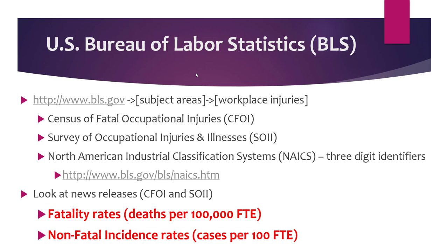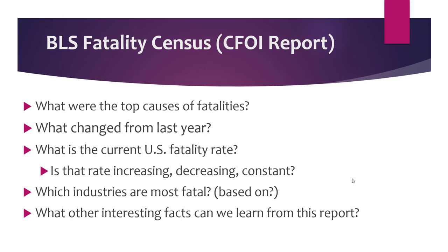This was covered on Tuesday. I talked about the fatality report, the non-fatal injury and illness report, the industrial classification system, and the units expressed when talking about fatality rates versus non-fatal incidence rates. These are the slides from Tuesday's lecture — I indicated we'd come back to these in the pre-recorded. So: what were the top causes of fatalities? What changed from last year? What is the current U.S. fatality rate — is it increasing, decreasing, or constant? Which industries are most fatal, and what's it based on?